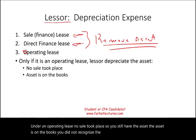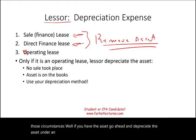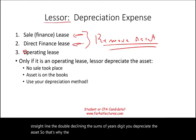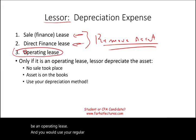Well, if you have the asset, go ahead and depreciate it under an acceptable method. It doesn't matter whether you use straight-line, double declining, or sum-of-years digits — you depreciate the asset. So the lessor issue is pretty straightforward when it comes to depreciation expense. To summarize: it has to be an operating lease, and you would use your regular depreciation method.